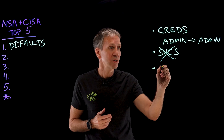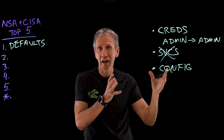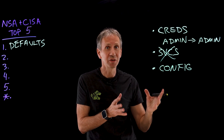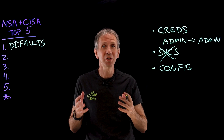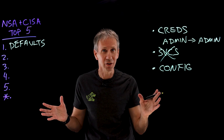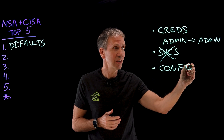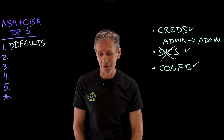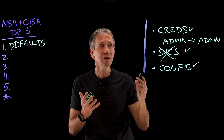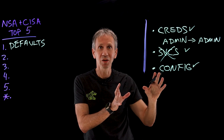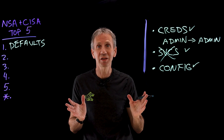Another example would be default configuration parameters. Maybe a web server uses a default self-signed certificate just to get the thing up and running, but that's not intended for use on the worldwide internet where all kinds of attacks can occur. We need to change these kinds of things to make sure the system is secure. We refer to all of these changes as hardening — taking the system that is soft in its original configuration and hardening it by removing anything that's not necessary.